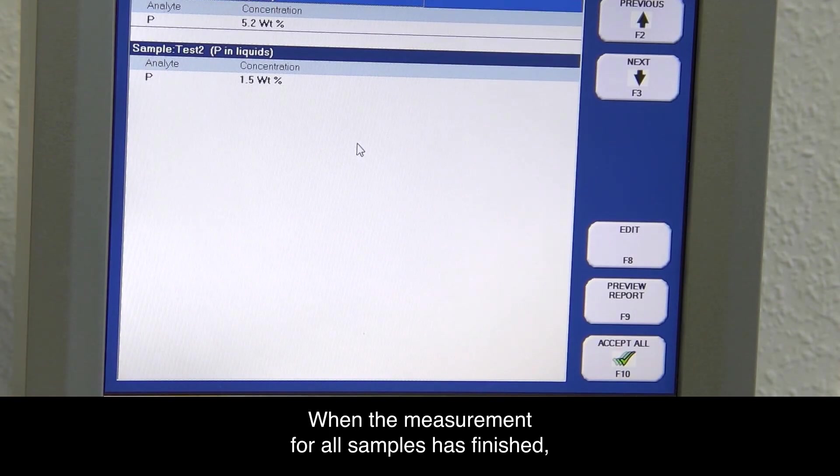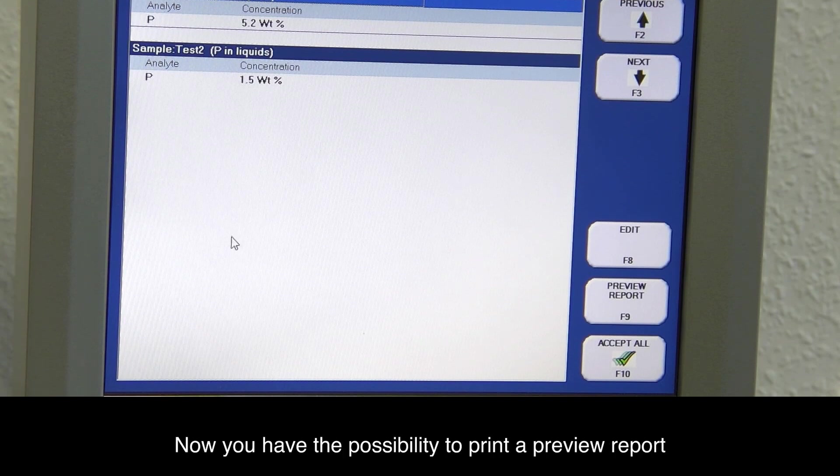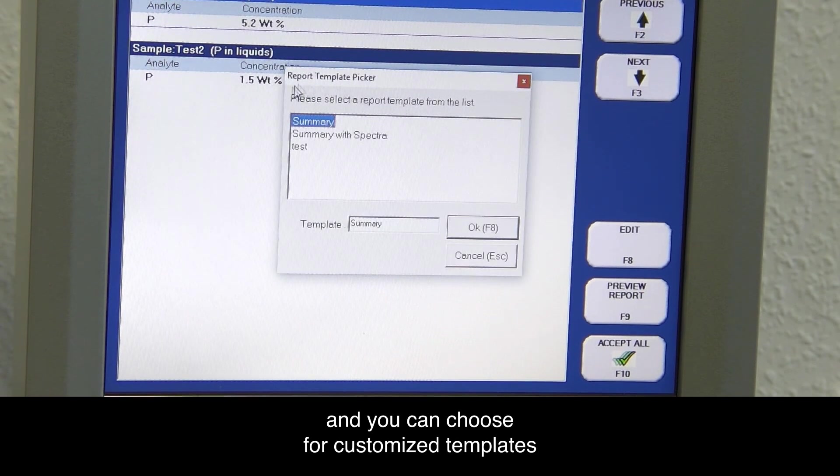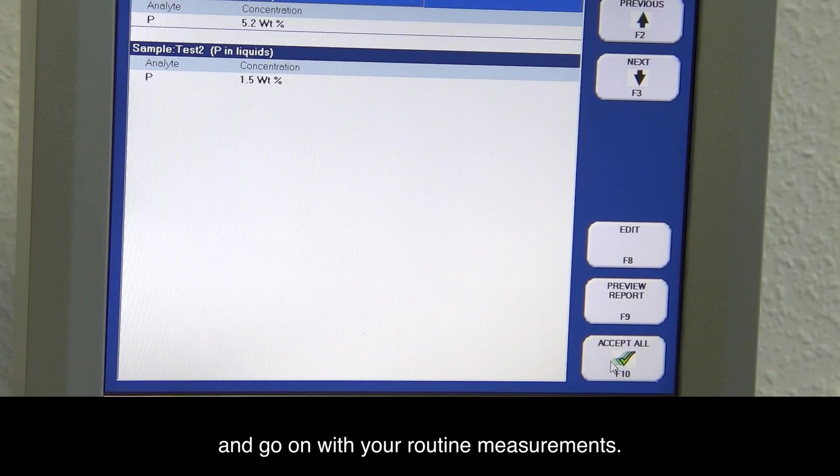When the measurement for all samples has finished, then you can see all the results here in this screen. Now you have the possibility to print a preview report and you can choose customized templates, or you can just click on accept all and go on with your routine measurements.